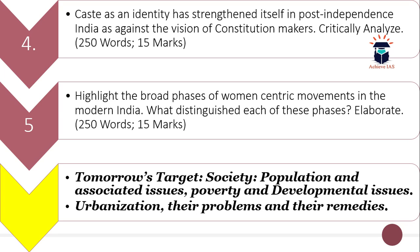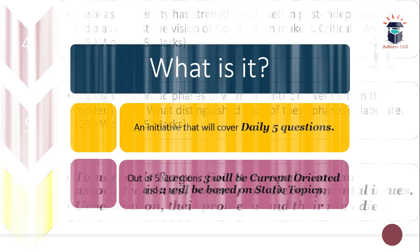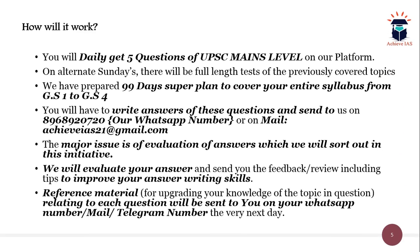We don't just pick any topic — we follow a detailed timetable. We give you the target one day in advance; for example, tomorrow's target is society and urbanization, so you will receive static questions from those topics tomorrow. We have prepared a 99-day long timetable in which we daily give you five questions, two of which come from the static topic given to you one day in advance.